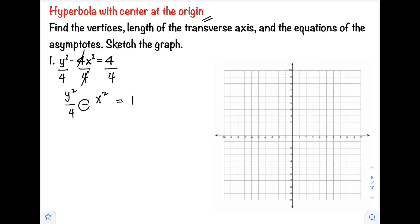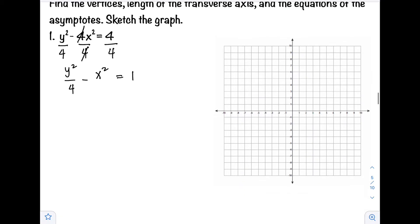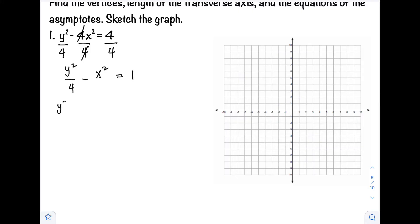So this is now our standard form of the hyperbola. As you can see, the negative is attached to our x term, meaning our hyperbola opens vertically, upward and downward. It follows the formula y squared over a squared minus x squared over b squared equals 1.